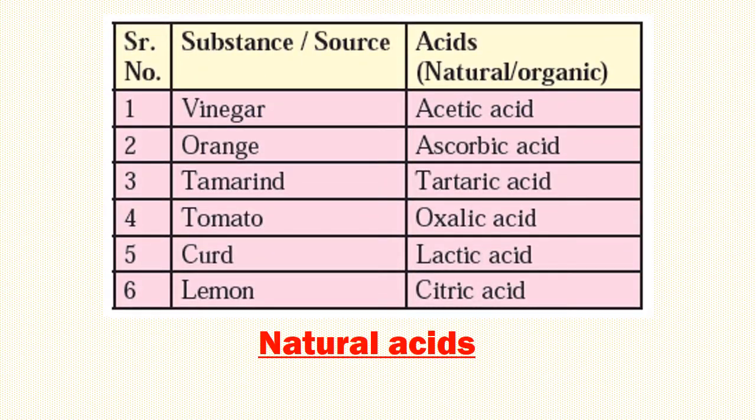These substances contain natural or organic acids: vinegar contains acetic acid, orange contains ascorbic acid, tamarind contains tartaric acid, tomato contains oxalic acid, curd contains lactic acid, and lemon contains citric acid.